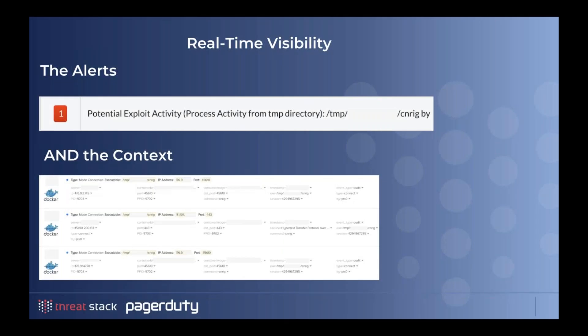A quick example of how this worked in this particular attack: the specific alert was running a process out of the temp directory. If we just knew that, it would be helpful, but difficult to trace back. By also having all the other context from the Docker container — what was happening, what was the executable, where did it come from, what IP address, what port was it trying to communicate outside of the container through the network — all of that helps stitch together these missing pieces into a cohesive story that we can use to really understand what's happening.